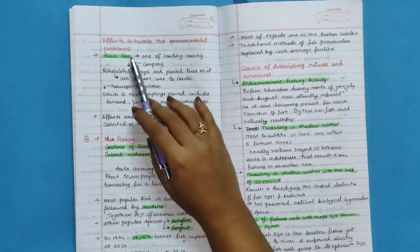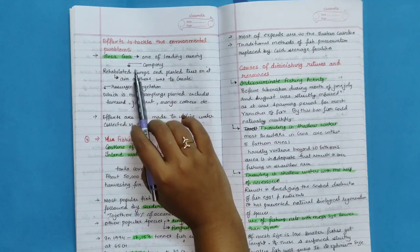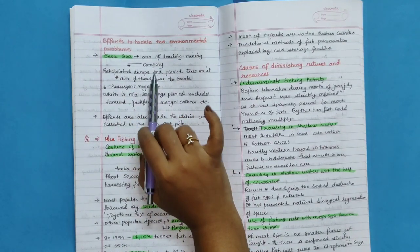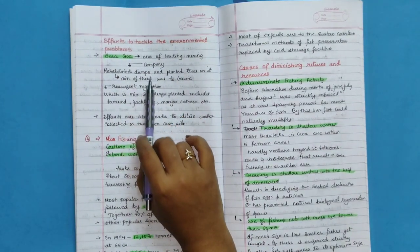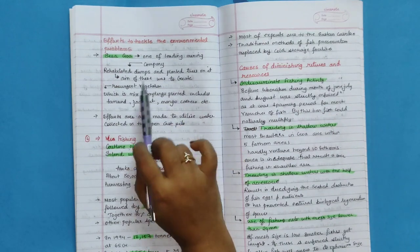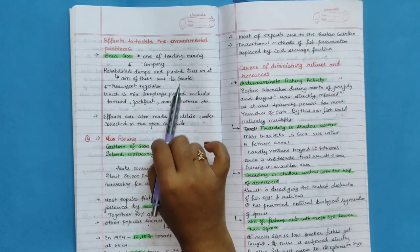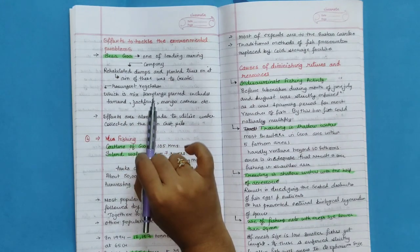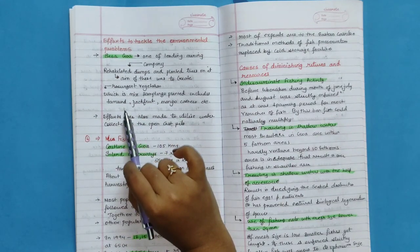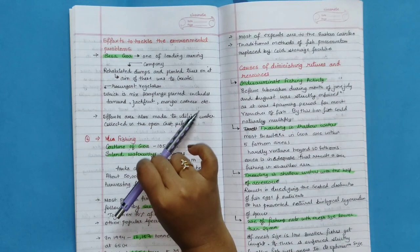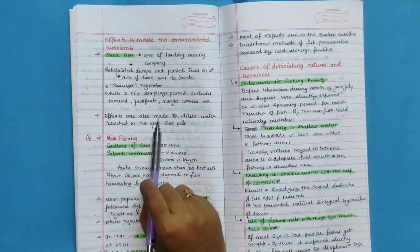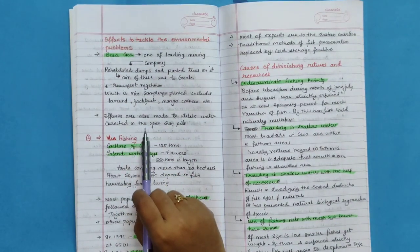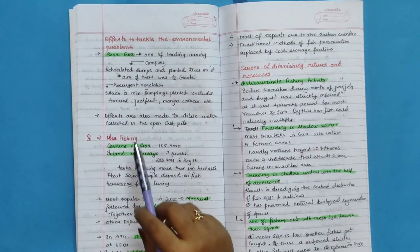Efforts to tackle the environmental problem by Sesa Goa, one of the leading mining company: rehabilitated dumps and planted trees on it. Aim of this was to create resurgent vegetation, which is a mix of samplings planted, including tamarind, jackfruit, mango, cashew, etc. Efforts are also made to utilize water collected in the open cast pits.